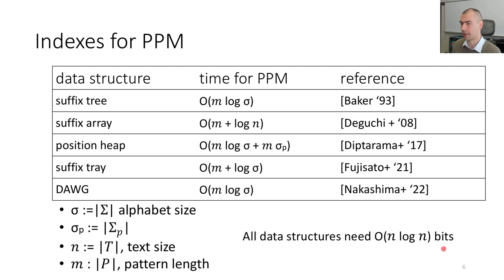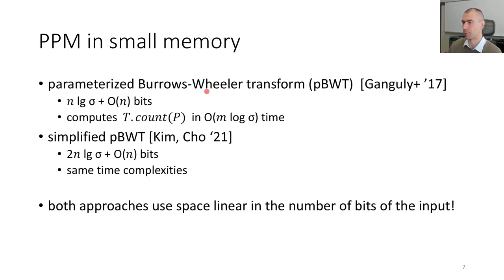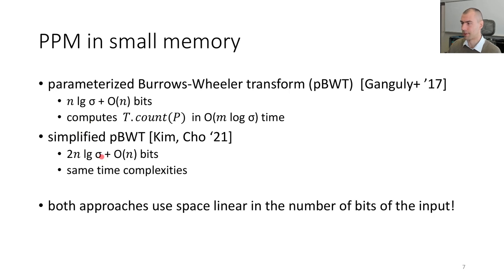But they all need n log n bits of space, which we don't want to use. Therefore we use another data structure called the parameterized BWT, which takes space linear in the number of bits of the input, which is very appealing, and the query can be answered in n log sigma time. Here we look at the simplified version, which unfortunately takes double the space, but it's very succinct in the definition and easy to extend.